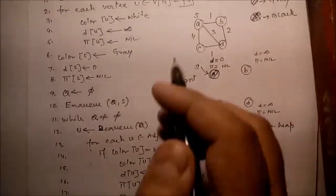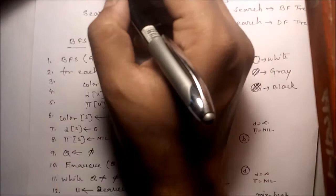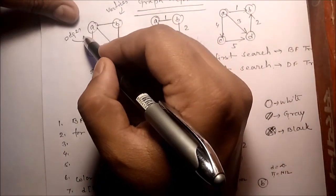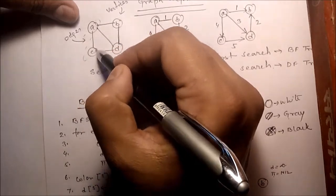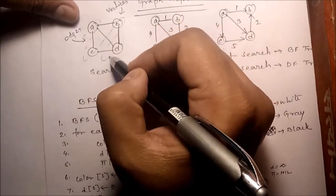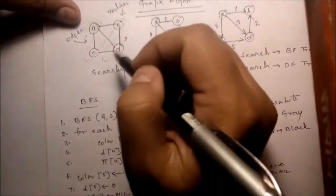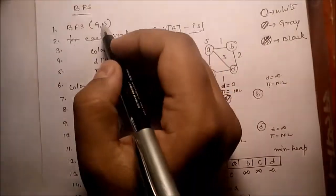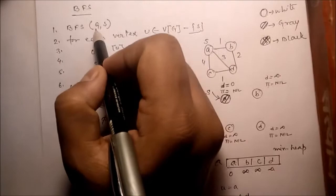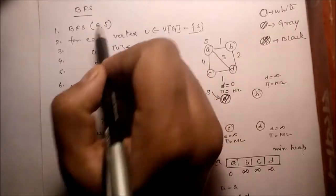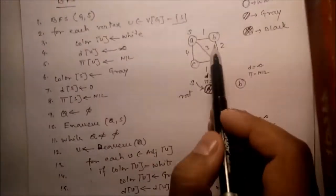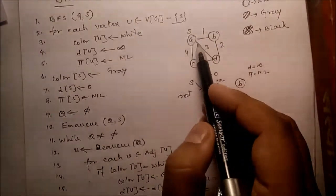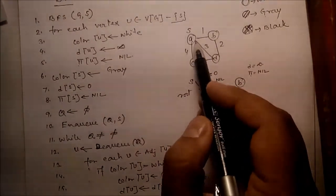Breadth first search means searching breadth-wise. If the starting node is A, then search this level, then this one, then this one. The input parameters are G and S — vertices and edges — and S is the starting node. Suppose in graph A, B, C, D, A is the starting node.